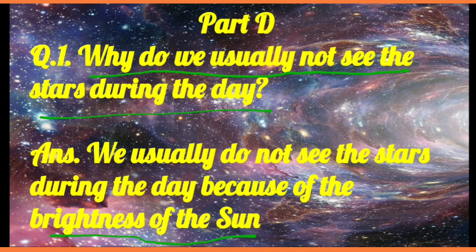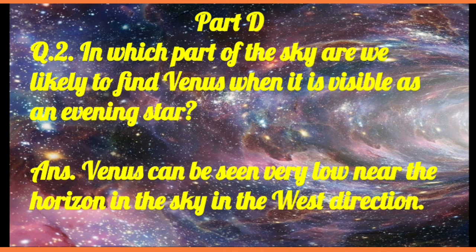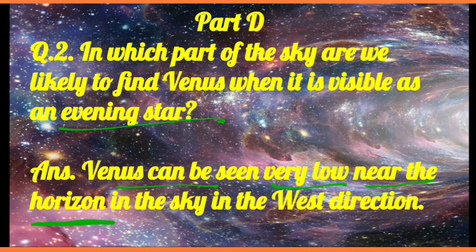Stars are here, but we do not see them just because of the brightness of the Sun. Question number 2: in which part of the sky are we likely to find Venus when it is visible as an evening star? Venus can be seen very low near the horizon — where the sky meets the ground — as an evening star.